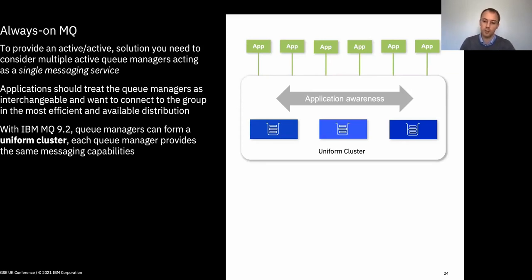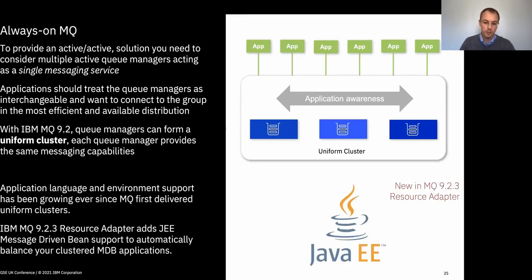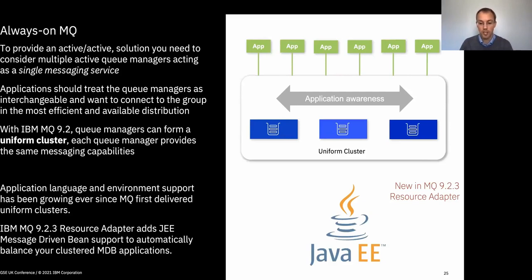One of the things we've done in the 9.2.3 release — if you're familiar with Uniform Clusters already — is that we've added support for MDB applications (Message Driven Beans) to be able to take advantage of this. So you can actually have your JEE environments connecting to Uniform Clusters and being dynamically balanced across the queue manager instances based on your workload balancing needs.